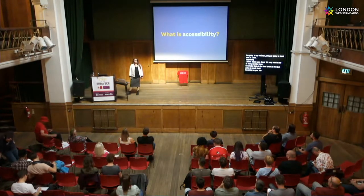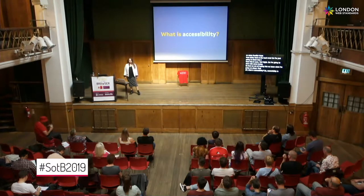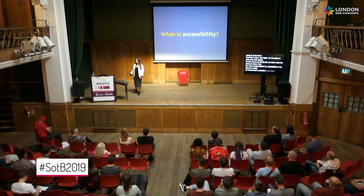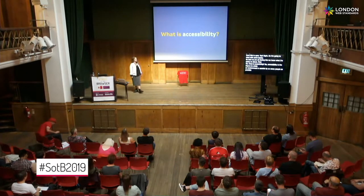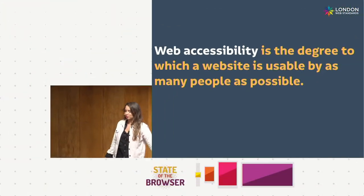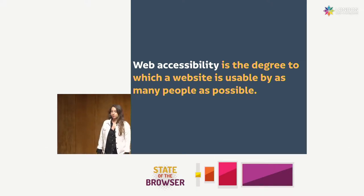So I'm going to start with some basics so that we're all feeling like we know what I'm going on about. First off, what is accessibility? Accessibility is the degree to which an environment is usable by as many people as possible, which therefore means that web accessibility is the degree to which a website is usable by as many people as possible.